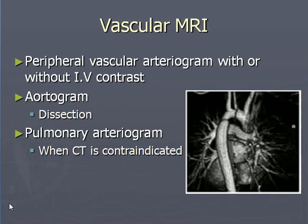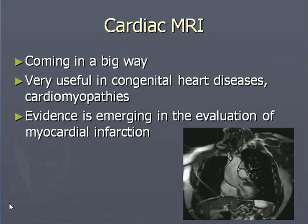Vascular MRI: peripheral vascular arteriogram with or without IV contrast, aortogram, dissection, pulmonary angiogram, and arteriogram when CT is contraindicated. Cardiac MRI — you can see the cardiac chambers, the aorta and other vessels very clearly. Very useful in congenital heart diseases, cardiomyopathies, and emerging evidence in the evaluation of myocardial infarction.